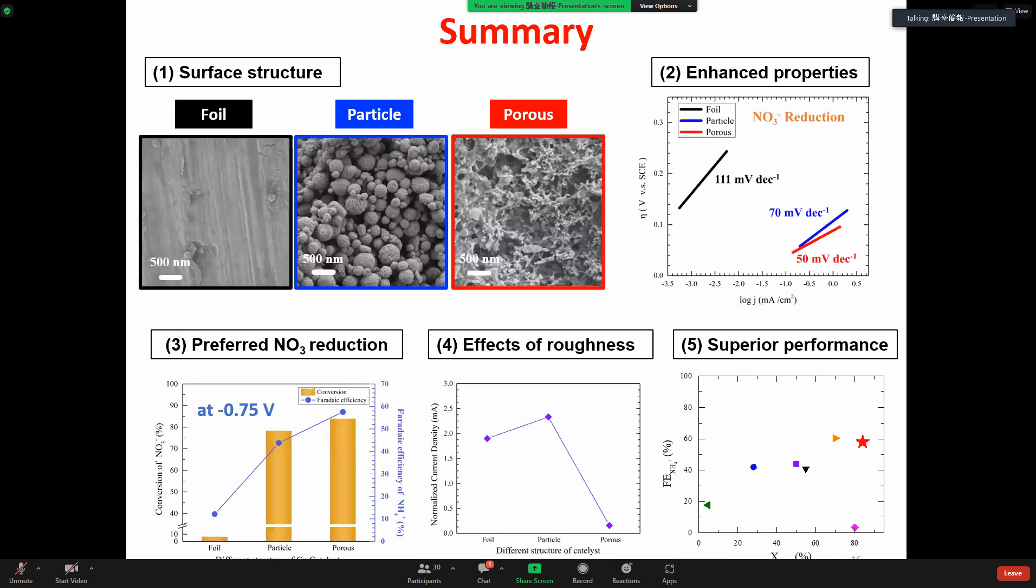In summary, I hope I have convinced you that the copper porous catalyst is a promising material for nitrate reduction toward ammonia. The porous structure can enhance the electrochemical properties and also improve the nitrate conversion and ammonium selectivity, as well as the Faraday efficiency.